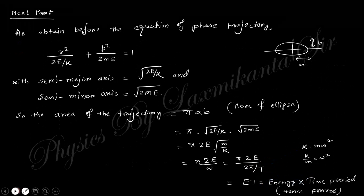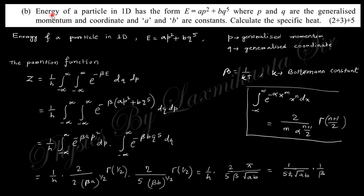The next question states that the energy of a particle in 1D is given as a function of generalized momentum p and coordinate q. Calculate the specific heat. The energy expression is given, and we proceed by computing the partition function.